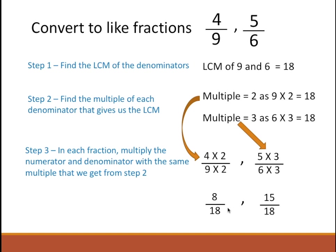Now that we have this common denominator — the like denominator of 18 — we can continue to do comparisons, addition, subtraction, and other operations. This is the way you would convert unlike fractions to like fractions.